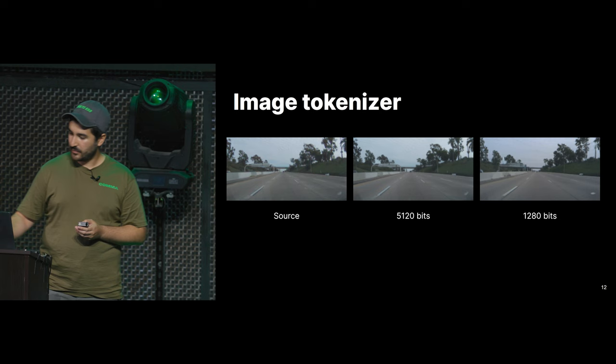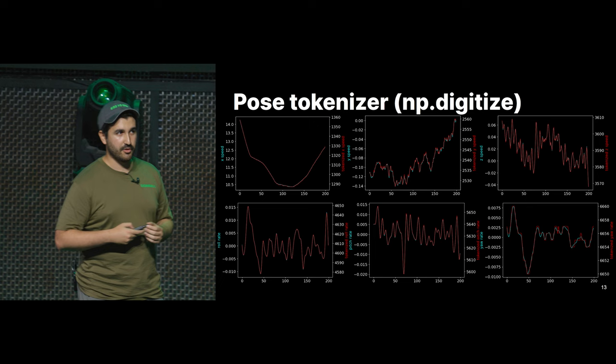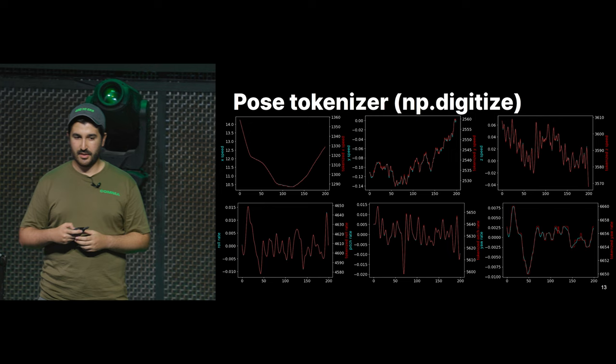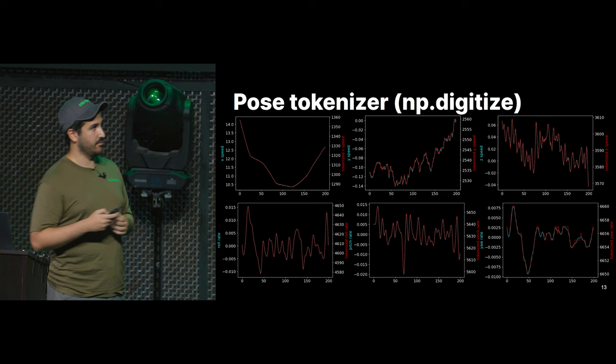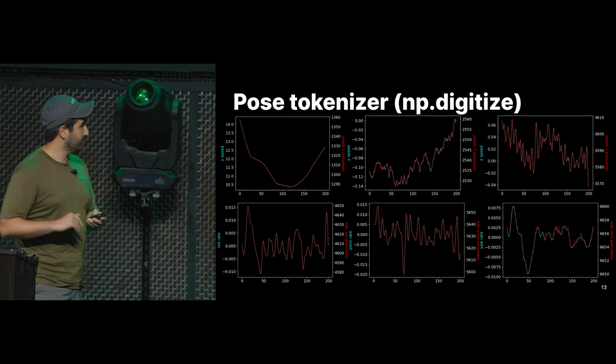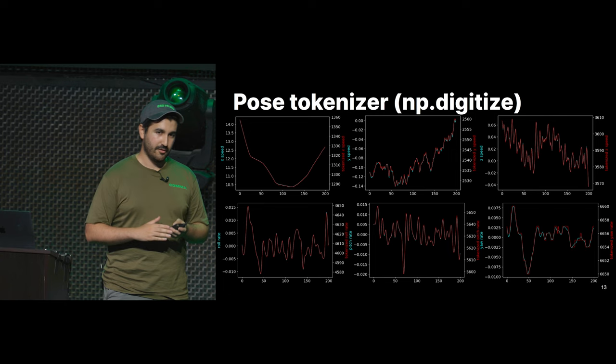For now we're using 128 tokens at 10 bits each. The pose tokenizer handles pose, which is six floating point numbers representing six degrees of freedom: x-speed, y-speed, z-speed, roll rate, pitch rate, and yaw rate. We need to tokenize these numbers for the next component. We tokenize them with a simple uniform binning — just digitize them, nothing fancy.